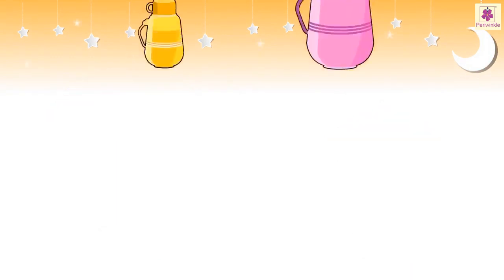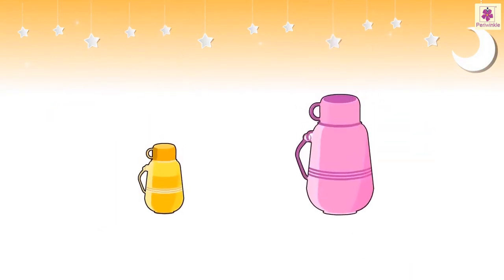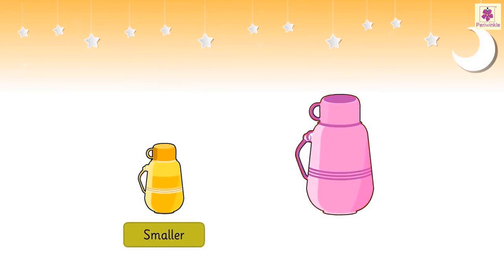For example, here the yellow bottle is smaller than the pink bottle, or we can say that the pink bottle is bigger than the yellow bottle.